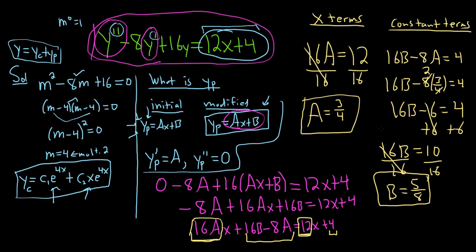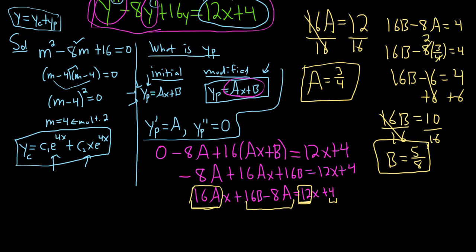Everything so far looks okay. Now we have our a, we have our b. So now the last thing to do, or almost the last thing to do, is write down what yp is.